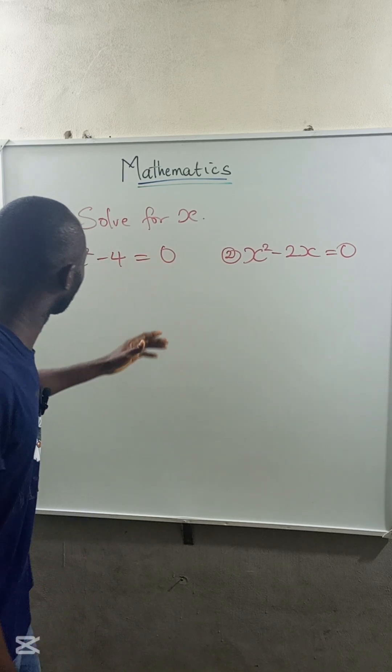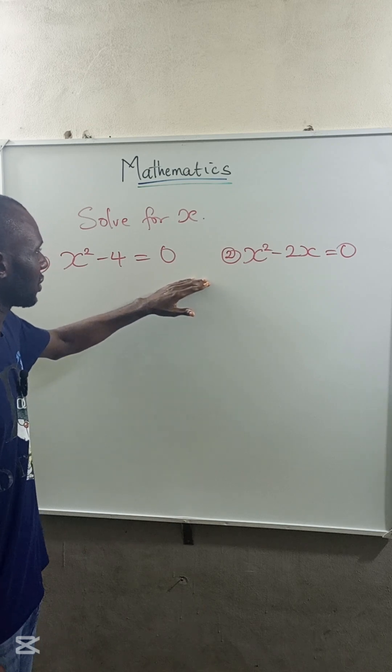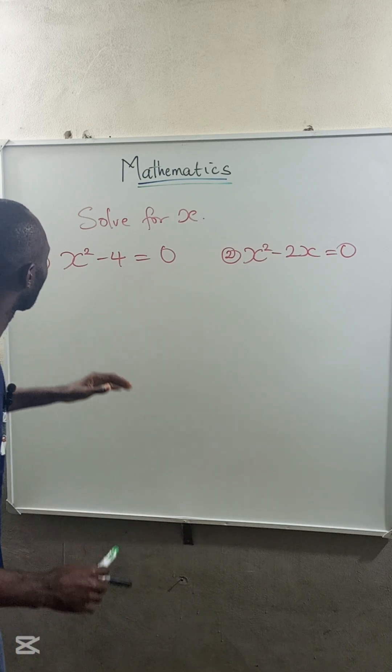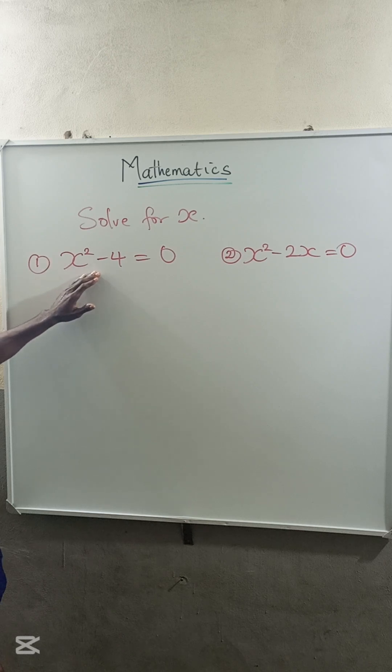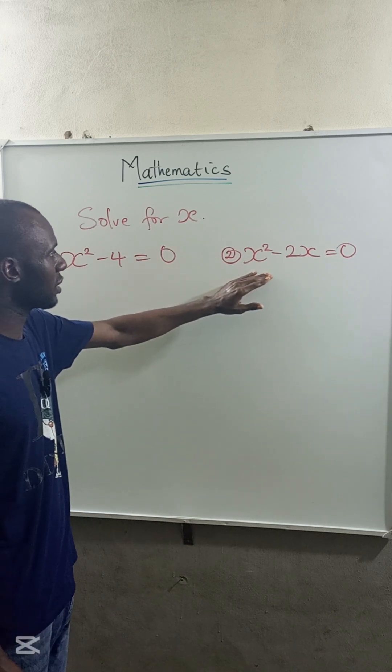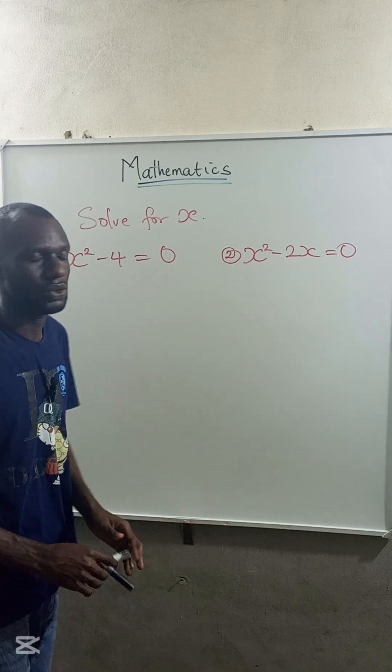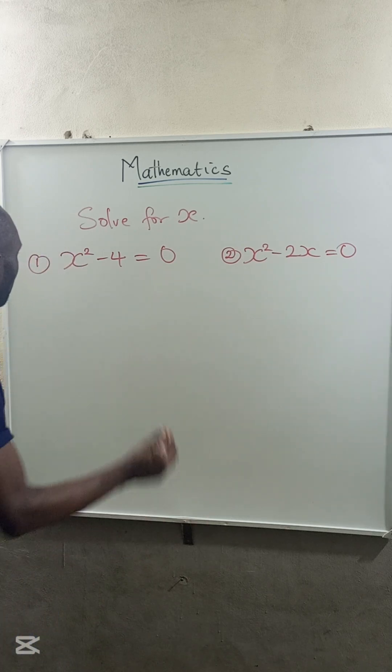So this is a quadratic equation, and we are given that we should solve for x. For one, x squared minus 4 is equal to 0, and for two, x squared minus 2x is equal to 0.